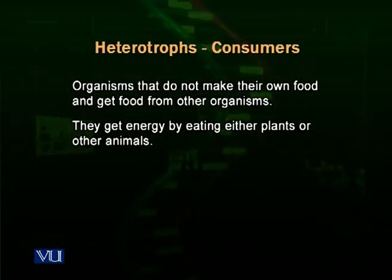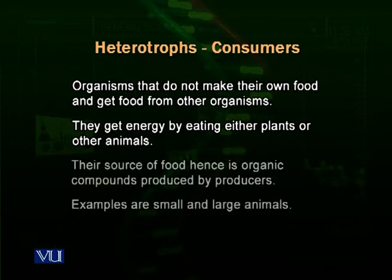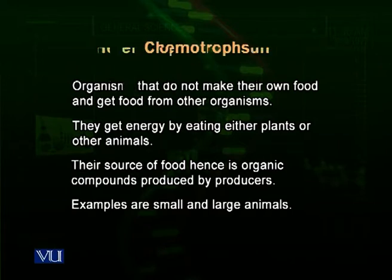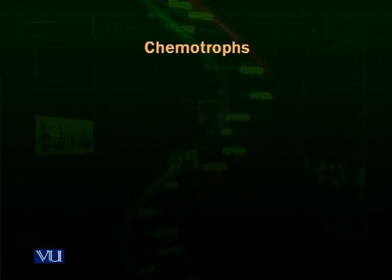Heterotrophs may also get their food by eating other animals. Those animals may be herbivores — plant eaters — or those animals may be carnivores themselves, flesh eaters. For example, lions, leopards, and cats are all carnivores and they are also heterotrophs.